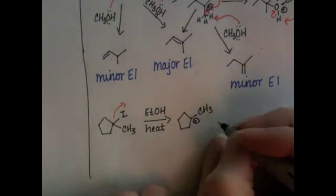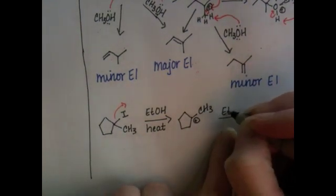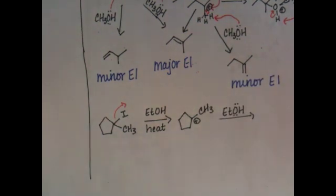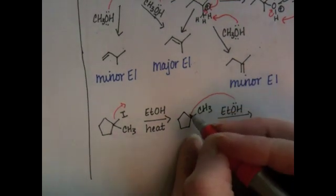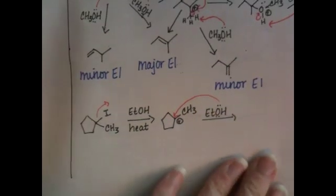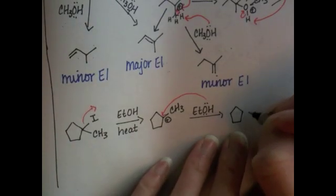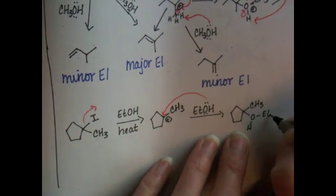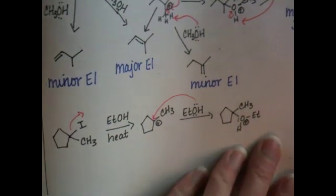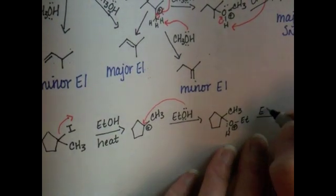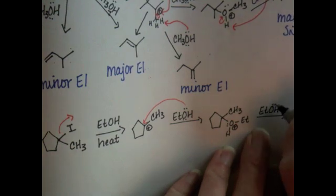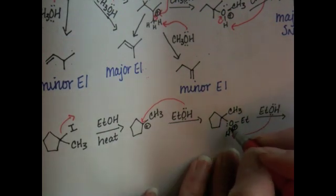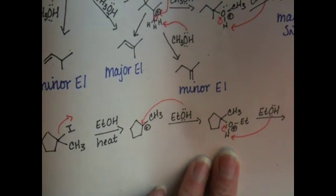And we are going to do substitution. Let's go ahead and draw the substitution product first. Remember that the lone pair of electrons in the ethanol are going to attack the carbocation and attach and make a high-energy transition state with this structure. Positive charge on the oxygen, which is unpleasant, and that gets resolved with a second ethanol molecule.